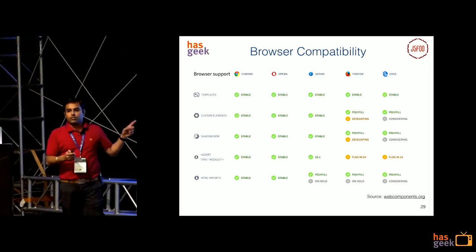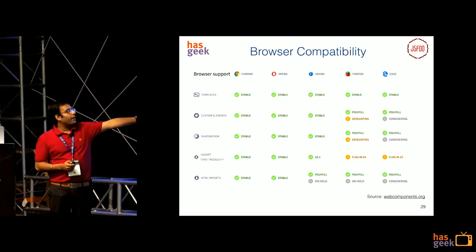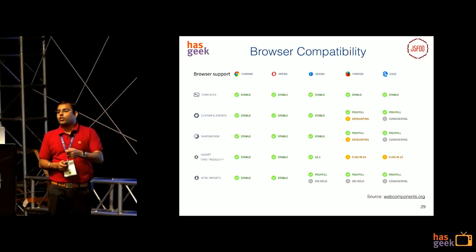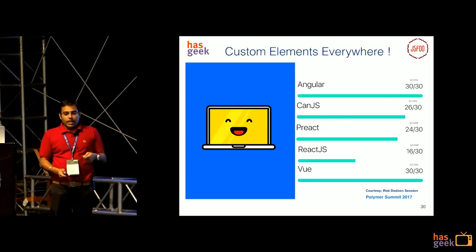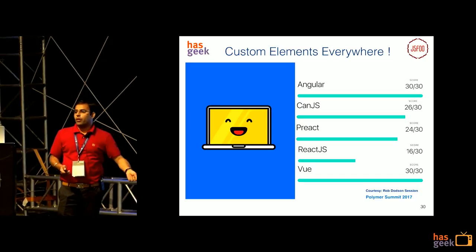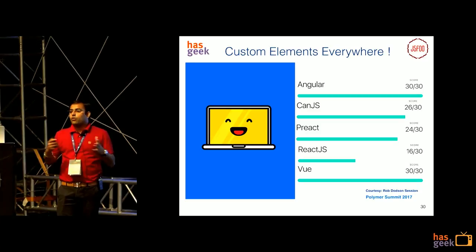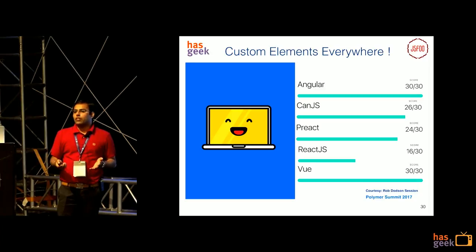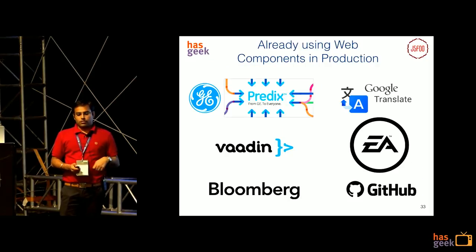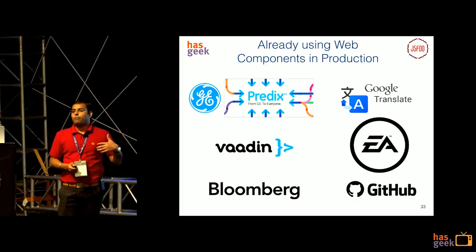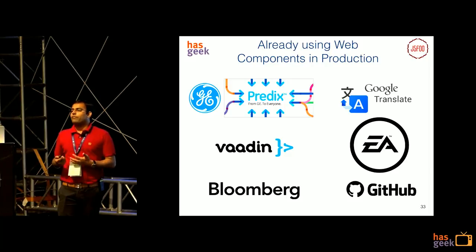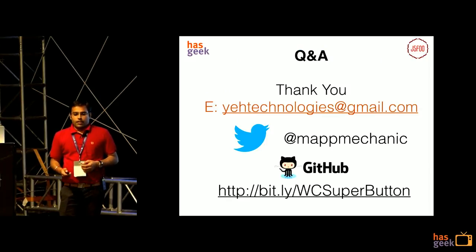This is the browser compatibility chart which shows a lot of green, which will boost your confidence using this in production. There is a website called custom-elements-everywhere, introduced by Rob Dodson at the Polymer Summit last month — it has a very good suite of tests for every framework showing how web components can be used, with examples. Many big companies are using web components in production today. If you inspect element on youtube.com, the YouTube web app is completely built with web components in Polymer today.